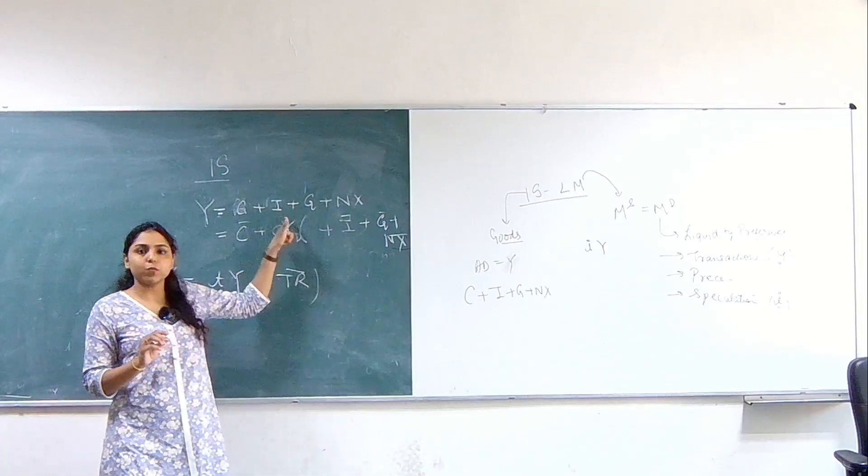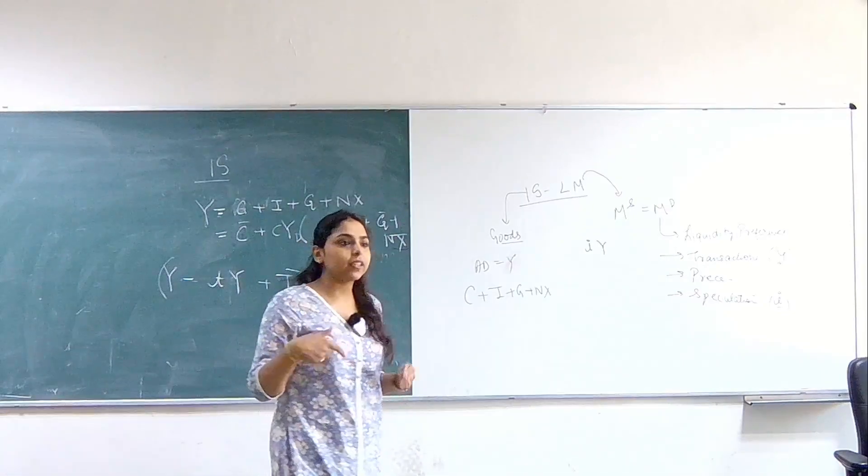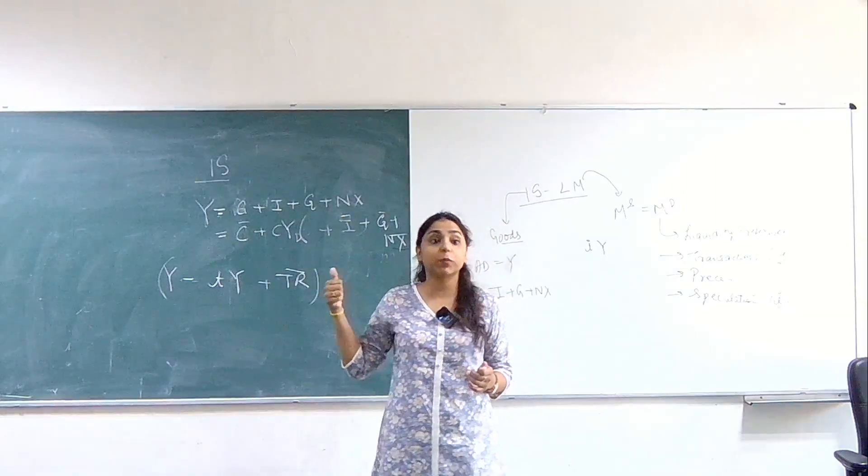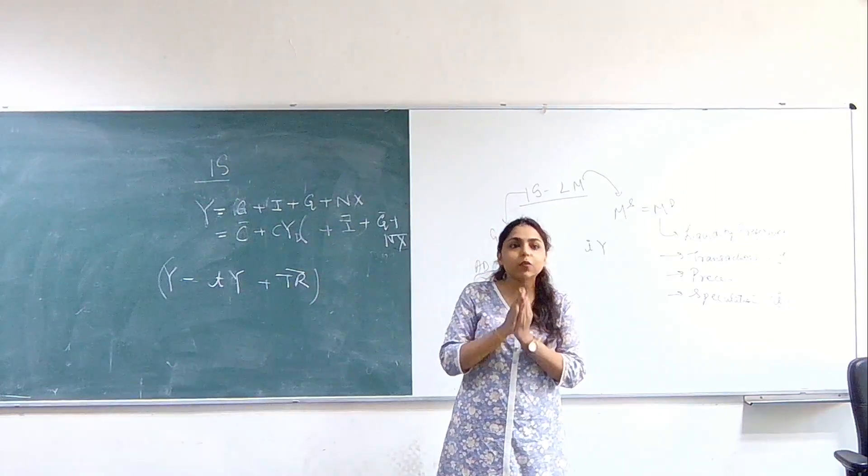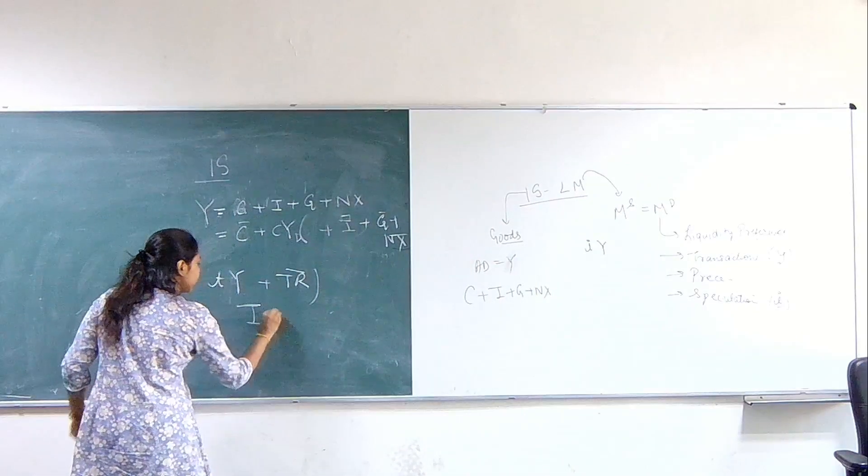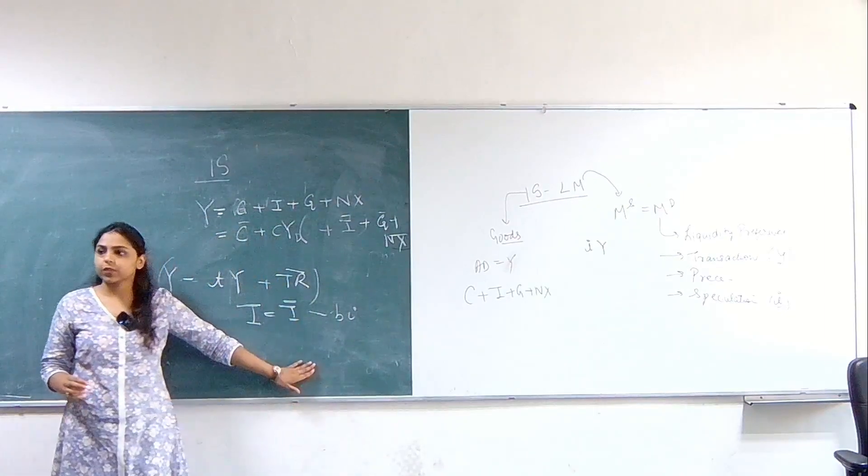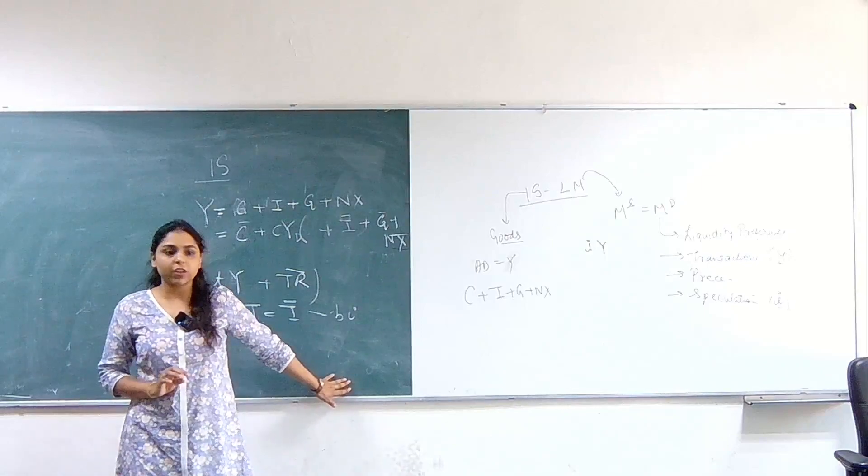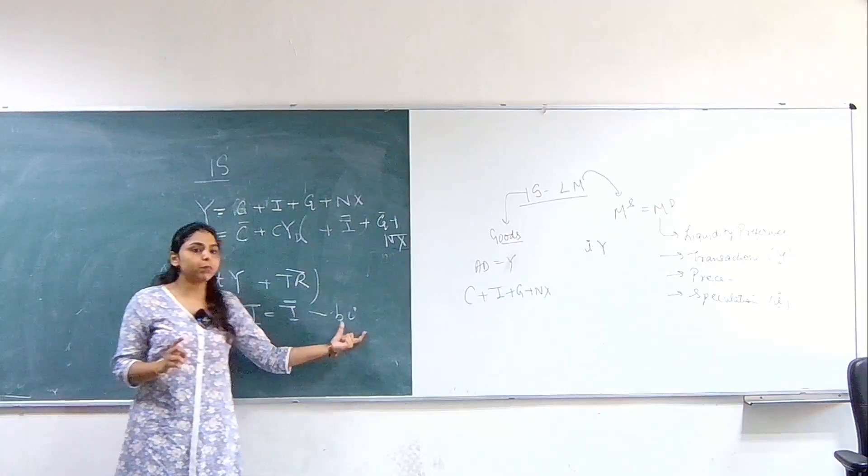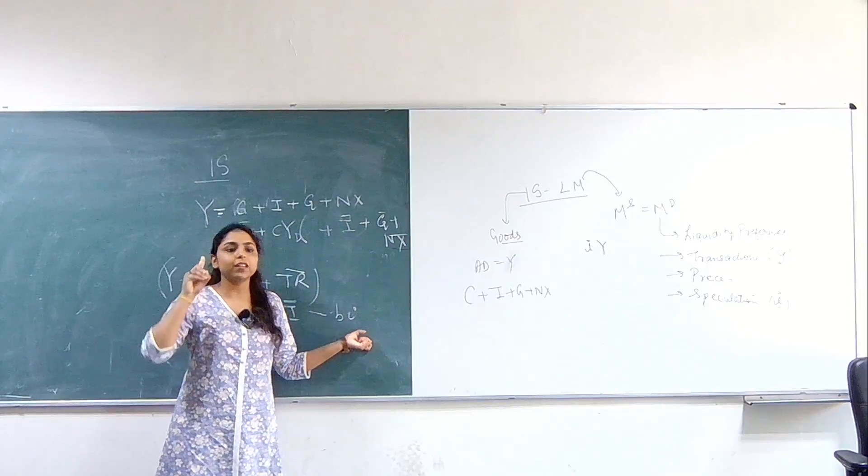All these things we have covered last time. Now, we are going to make one more change. So this girl had correctly pointed out that if the interest rate is changing, one very important component that would change would be the investment. So we are now just going to expand this investment function in this form. So investment is given by I bar minus BI. This is my investment function. This is that I bar component that we had always talked about. And now we bring in some notion of the inverse relationship between investment and interest rate.